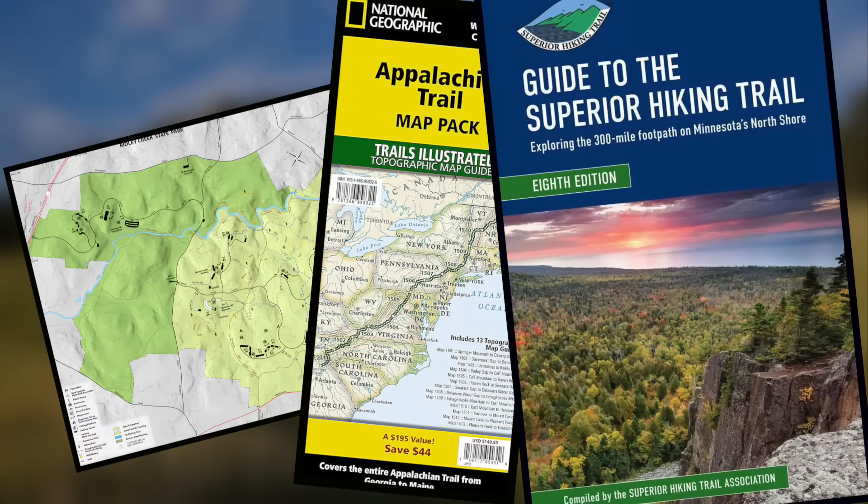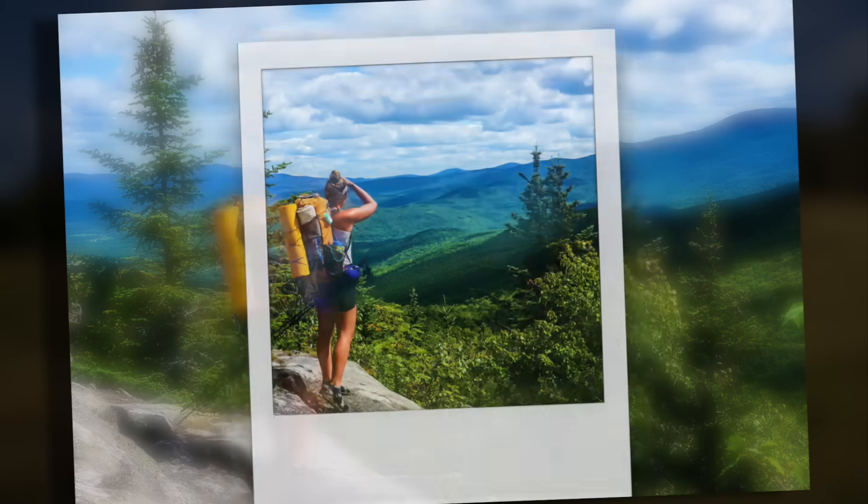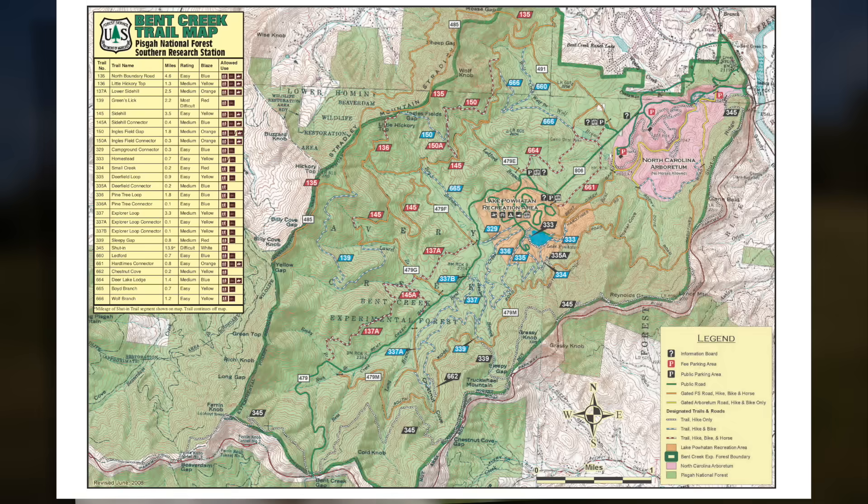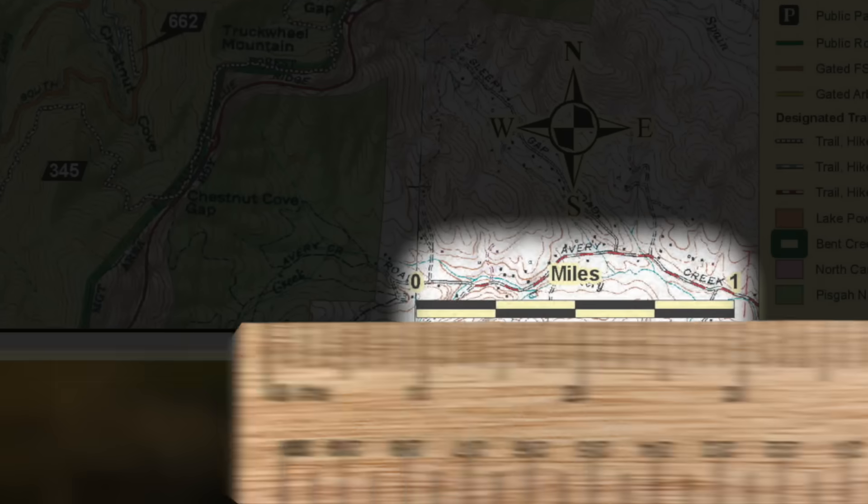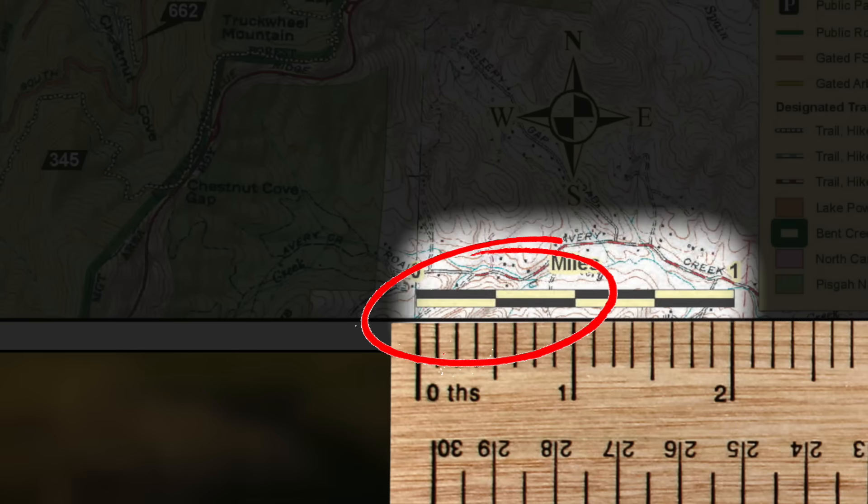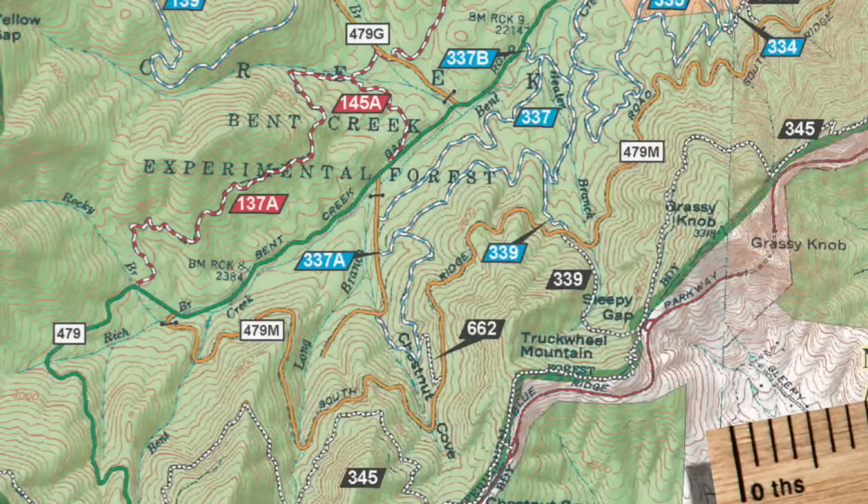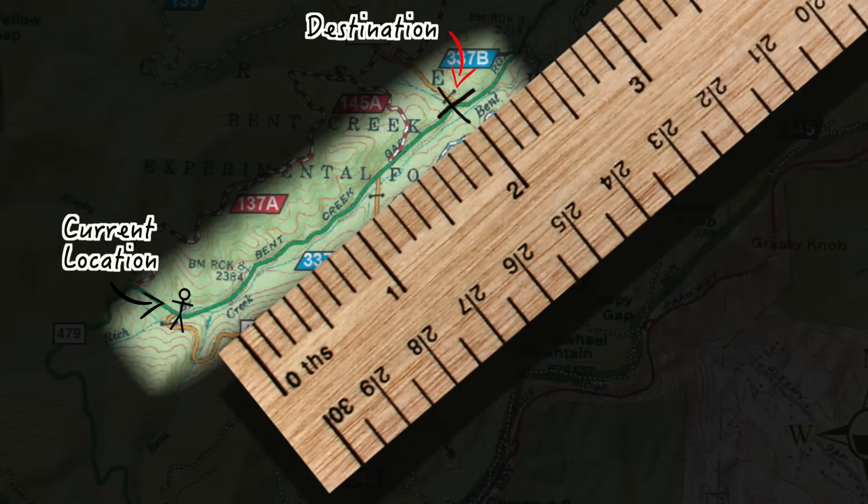You're on a hike trying to figure out how far away you are from your destination. You pull out a map whose bar scale tells you that one inch equals half a mile, and measuring two inches between your current location and your destination, you conclude that you're one mile out.